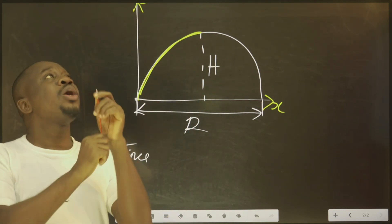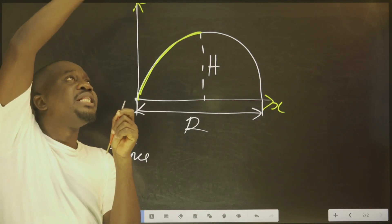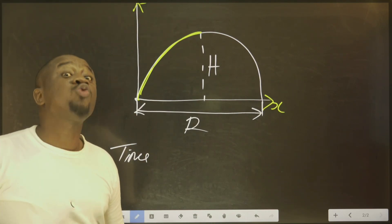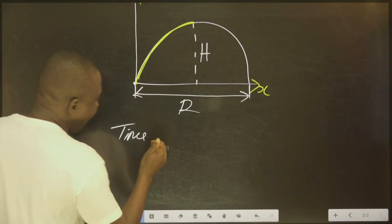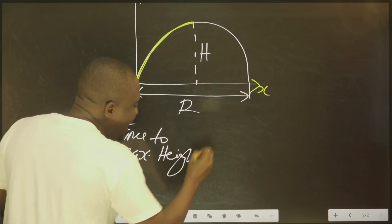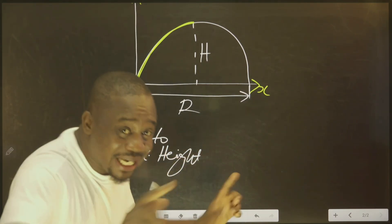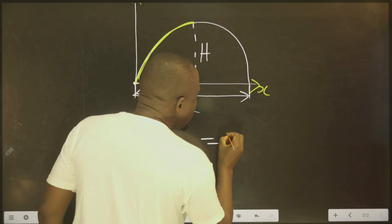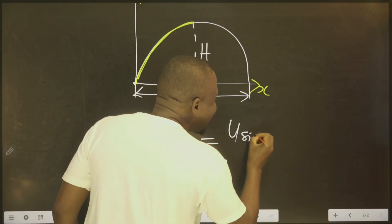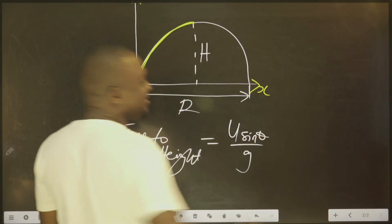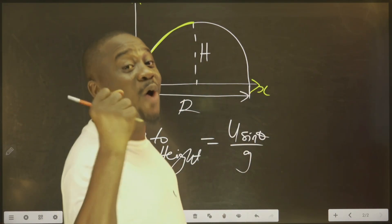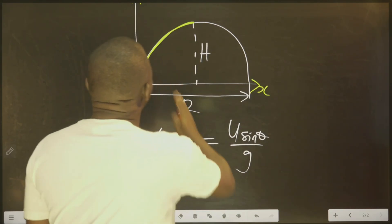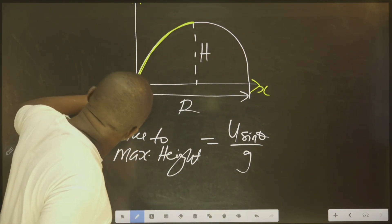How long did it take to reach the maximum height? Time to reach the maximum height. If you can remember this one, this particular formula, forget the rest. It is equal to U sine theta over G. This is the formula you should put in your hands. And remember what you need to put first.